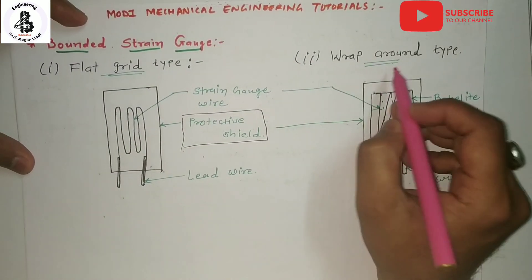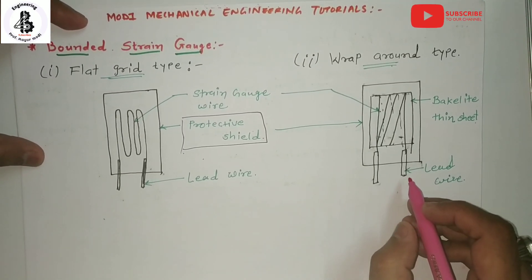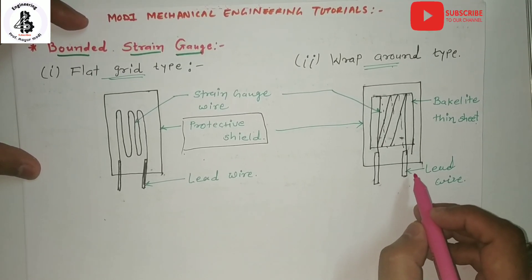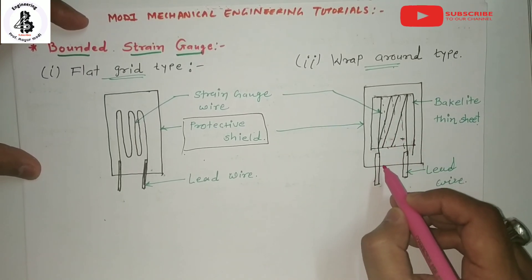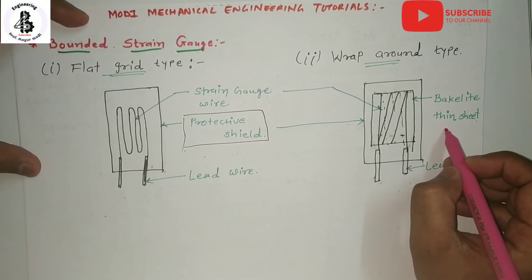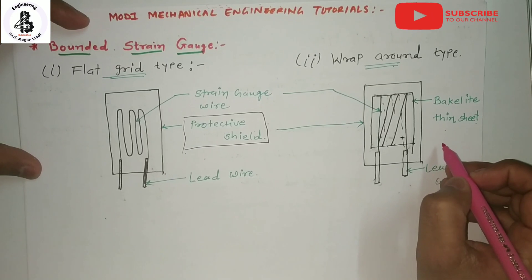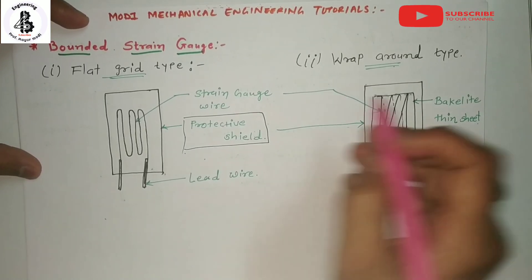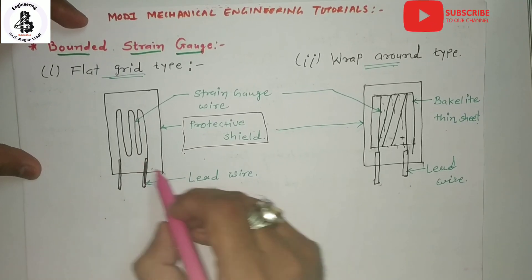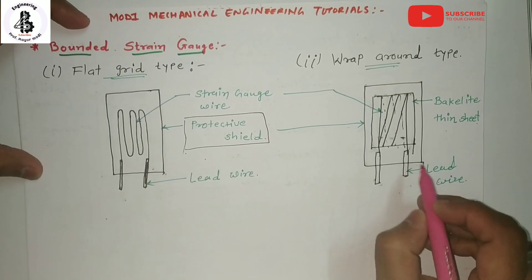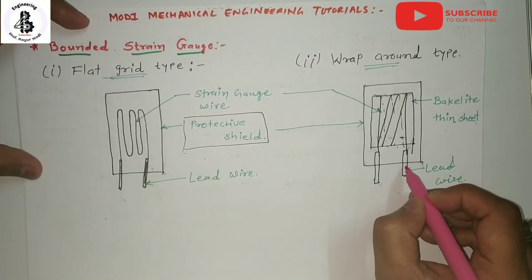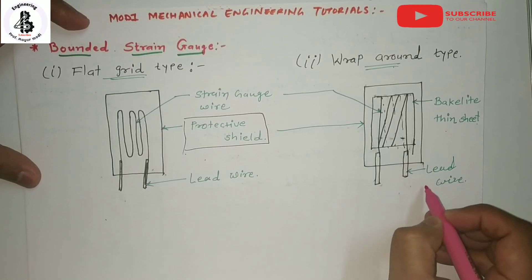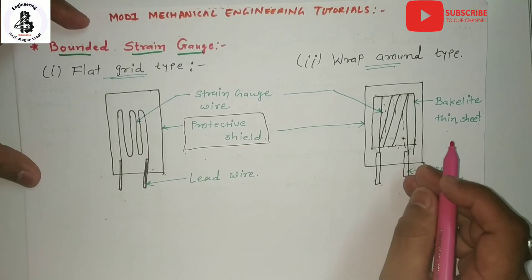The second type is the wrap around type of bonded strain gauge. In this type, the gauge is wound onto a flattened tube of paper or Bakelite strips, as shown in the figure. The gauge length is smaller than that of the flat grid type. This gauge achieves the same resistance value over a smaller length compared to the flat grid, which increases the effectiveness of the measurement and provides higher accuracy.